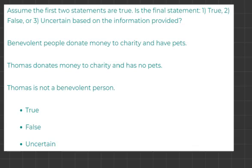The first two statements are: benevolent people donate money to charity and have pets; and Thomas donates money to charity and has no pets. The final statement is: Thomas is not a benevolent person.